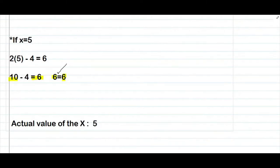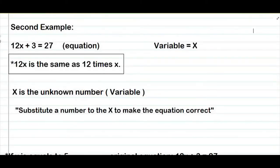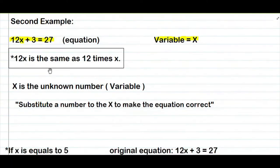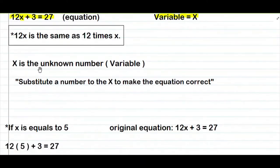Ganun lang siya kadali. Mukhang komplikado sa una pero basta natutunan mo yung basic, madali lang yan. Andito tayo ngayon sa ating second example. Tulad lang ng first example natin, meron pa rin sa ating binigay na equation, at same lang din ang variable pa rin natin is yung x. Pag isipan mo na nabing mong 12x, ang ibig sabihin lang noon 12 times x — yung 12, i-multiply mo sa x.